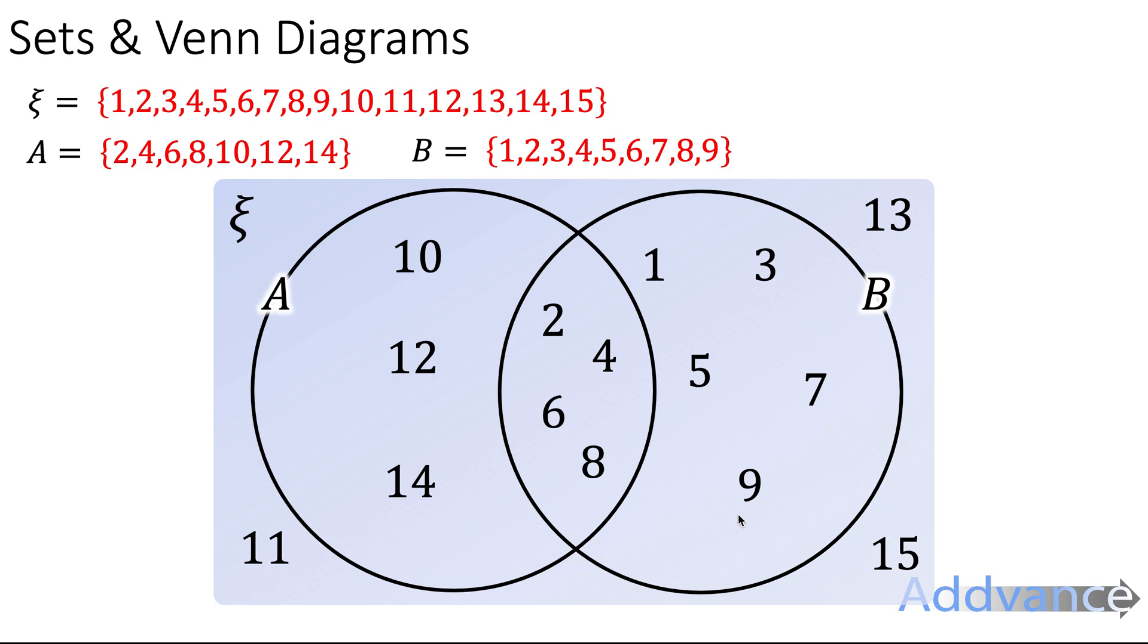Just take a moment to look at where the elements are. You can see that the elements in the middle, 2, 4, 6, and 8, are all in the universal set, and they're in A and B as well. 10, 12, and 14 are only in A. 1, 3, 5, 7, and 9 are only in B. And then 11, 13, and 15 are in neither A or B, but are in the universal set, so we do need to include them on the outside.